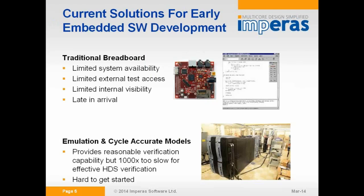Traditionally, how do we develop software? We might get a breadboard, some hardware with limited availability — maybe 10 units to schedule tasks on, like the PlayStation example. One of the challenges for complex designs is late hardware arrival — you don't actually get the hardware until way too late in the process, which challenges the whole problem of getting to market fast. You can't wait for the silicon. Maybe you use a previous generation, or try to model it some other way. People use RTL simulation models, huge accelerators, or cycle-accurate simulation technology. But hardware prototypes arrive too late, and modern verification technology is very slow and often very hard to get up and running.